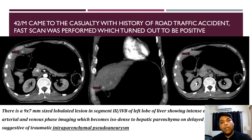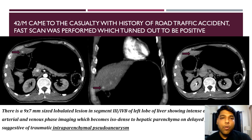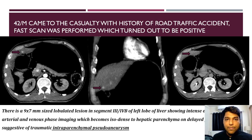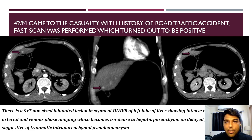Case 2: A 42-year-old male came to casualty with history of road traffic accident. FAST scan was performed which turned out to be positive. There is a 9x7 mm sized lobulated lesion in segment 3/4b of the left lobe of liver, which shows intense enhancement on arterial and venous phase imaging and becomes isodense to the hepatic parenchyma on delayed phase imaging, suggestive of traumatic intra-parenchymal pseudoaneurysm.